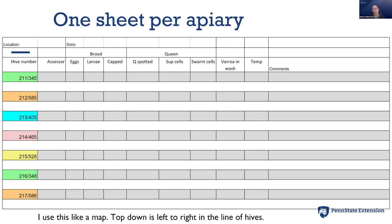I put the initials of the assessor — whoever was collecting the data that day. In my normal routine, I'm looking for all different stages of bees: were there eggs present, larvae, and capped brood? I don't really care how much of each, I'm just checking that they're all there — that's my assessment of the queen. If I spotted the queen, I like to know that, and my queens are marked so I know if she's been replaced. I write in the color of the dot on her back, whether I added it that day or it's from a previous visit.